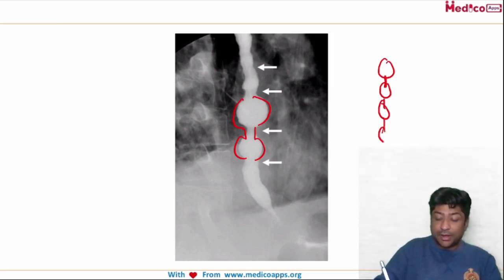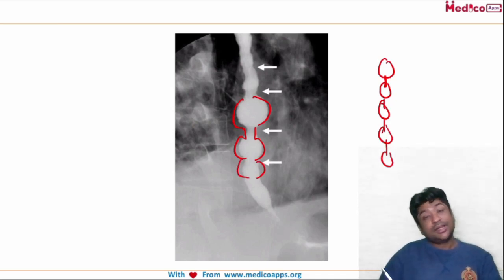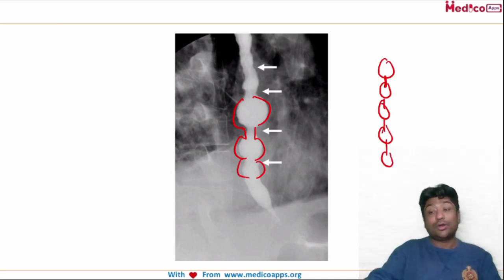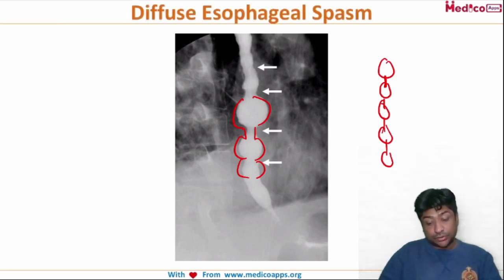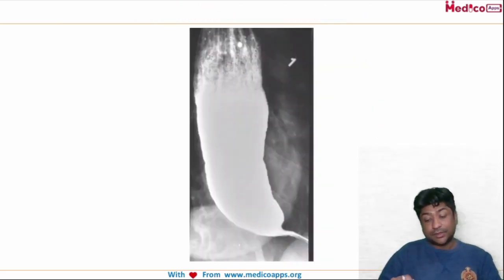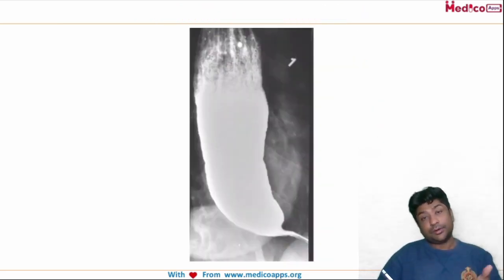Another image they can give you shows what is called a rosary bead appearance — like those beads or malas we have. This rosary bead appearance is again characteristic of diffuse esophageal spasm or nutcracker esophagus. In some cases they may also show you this radiograph of diffuse esophageal spasm.